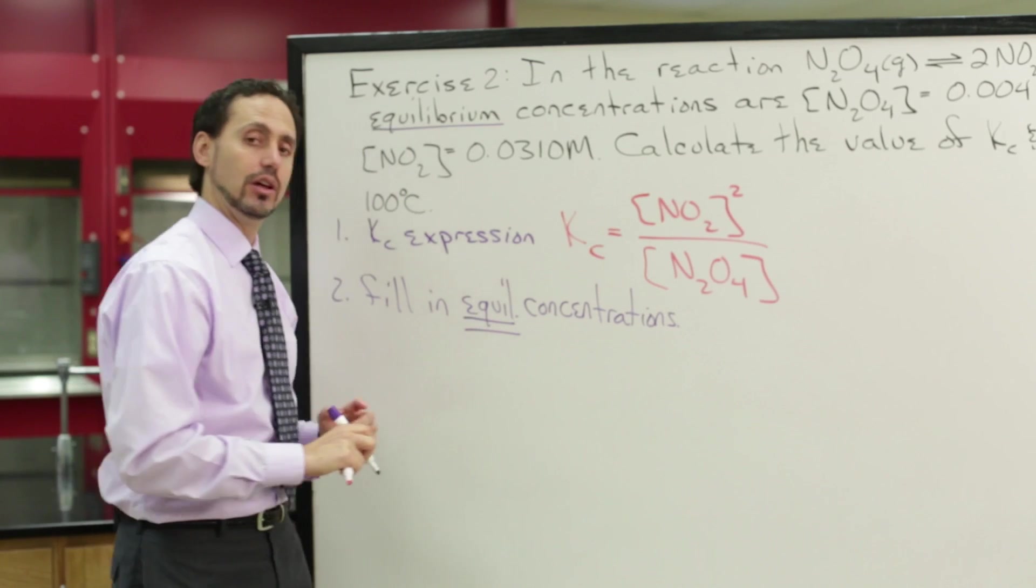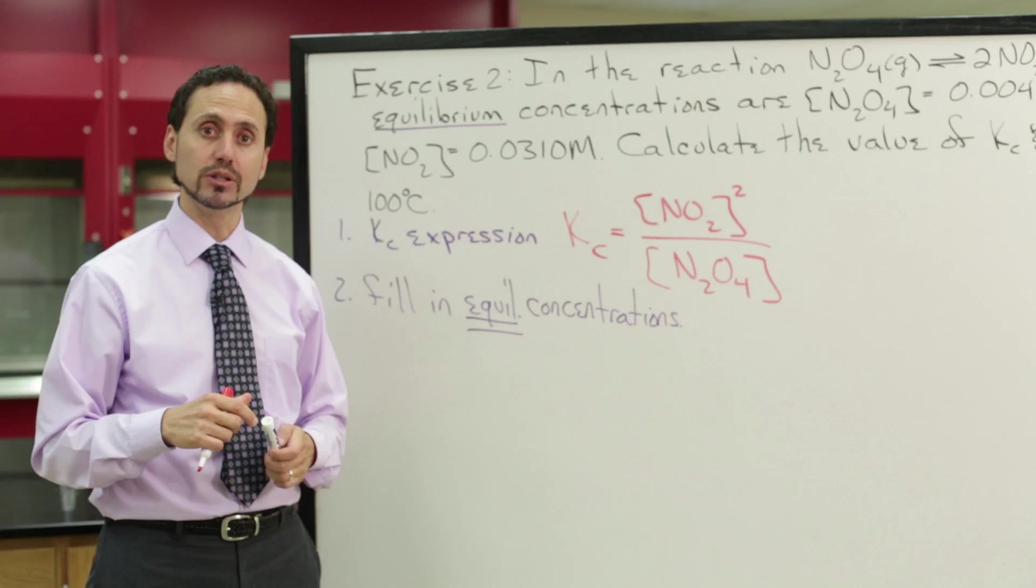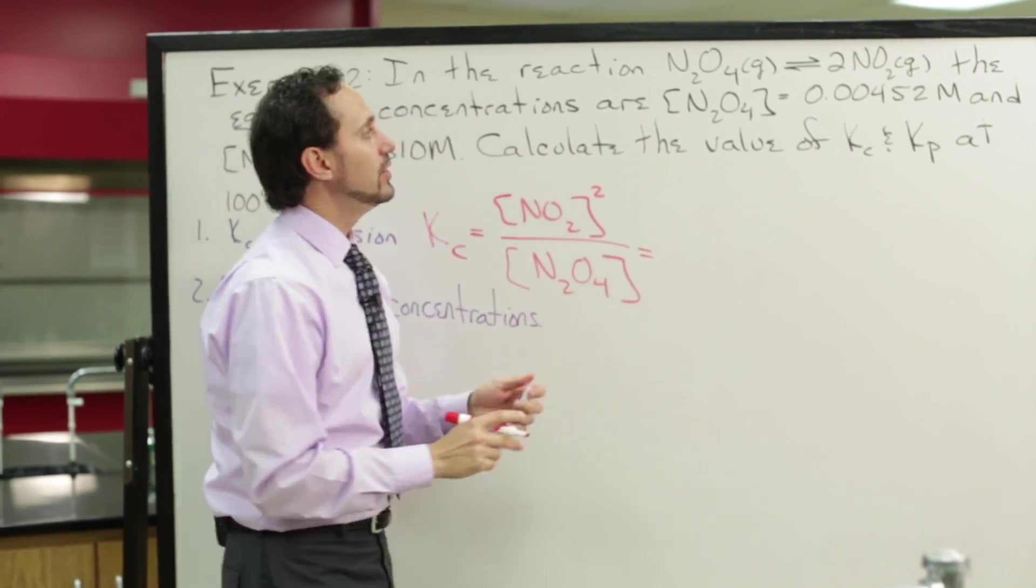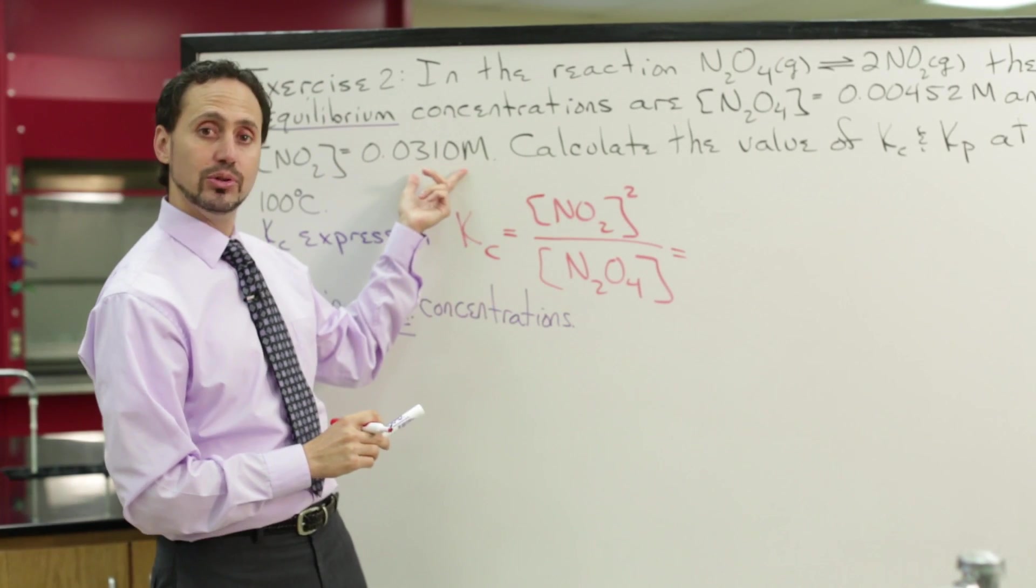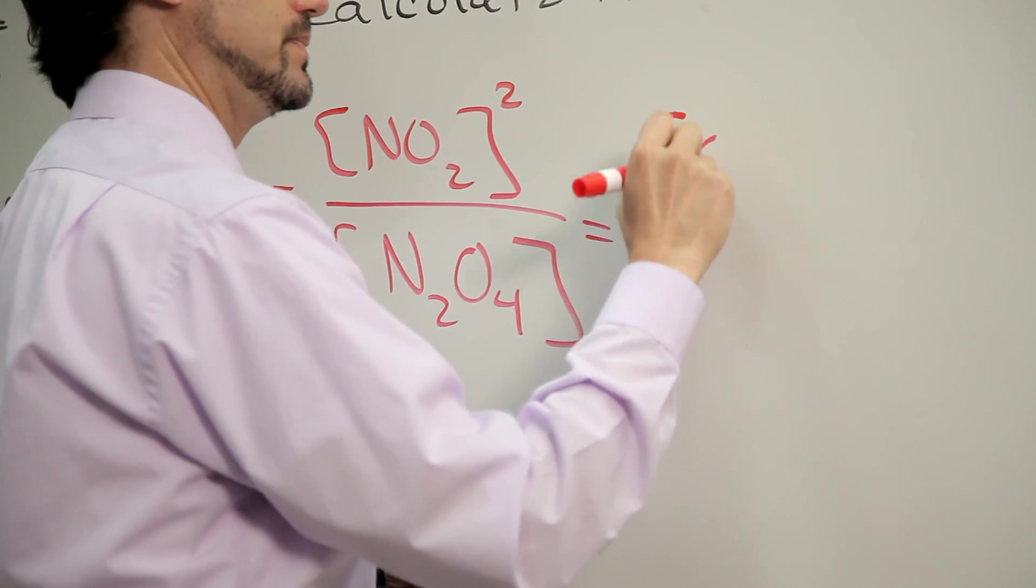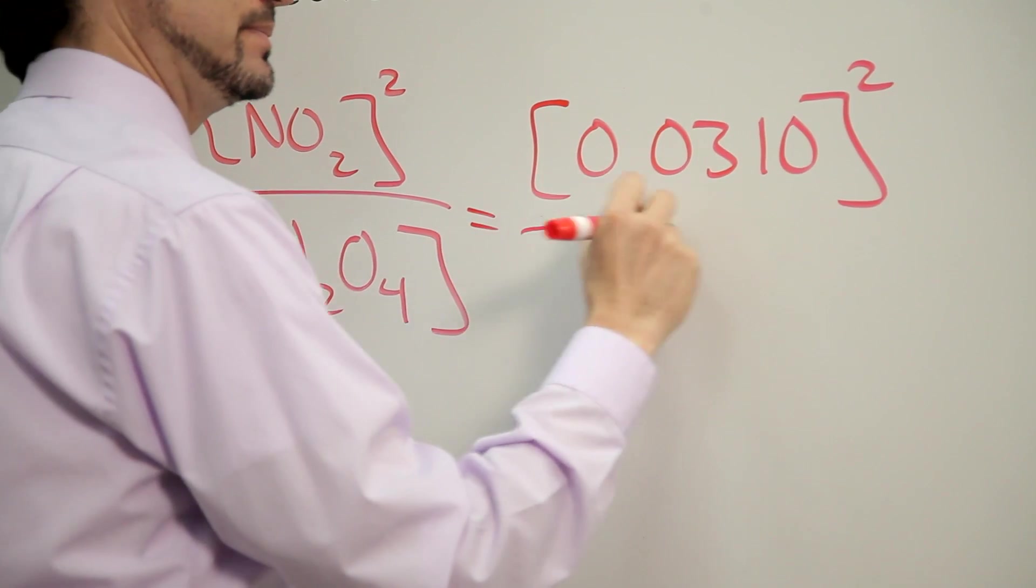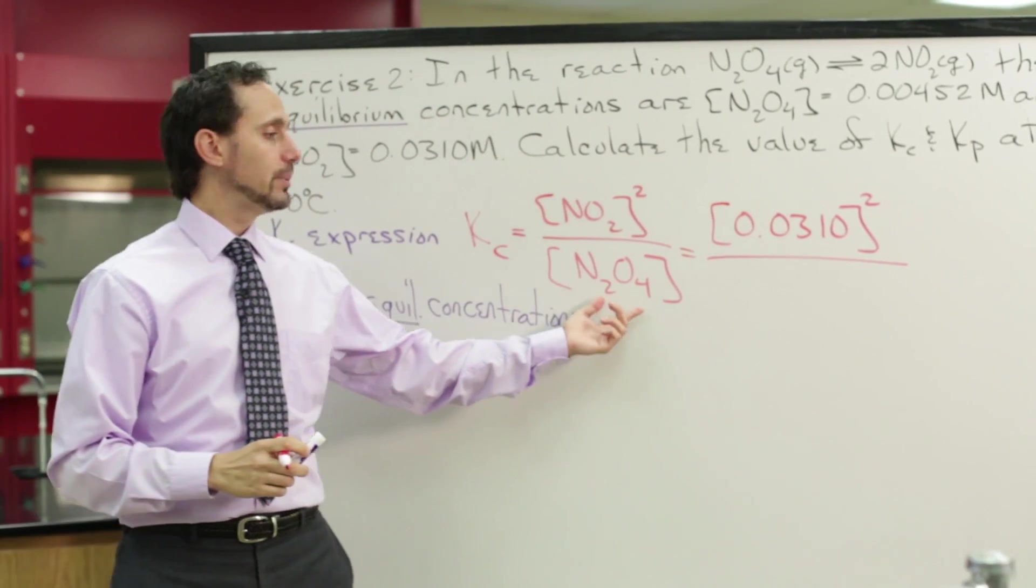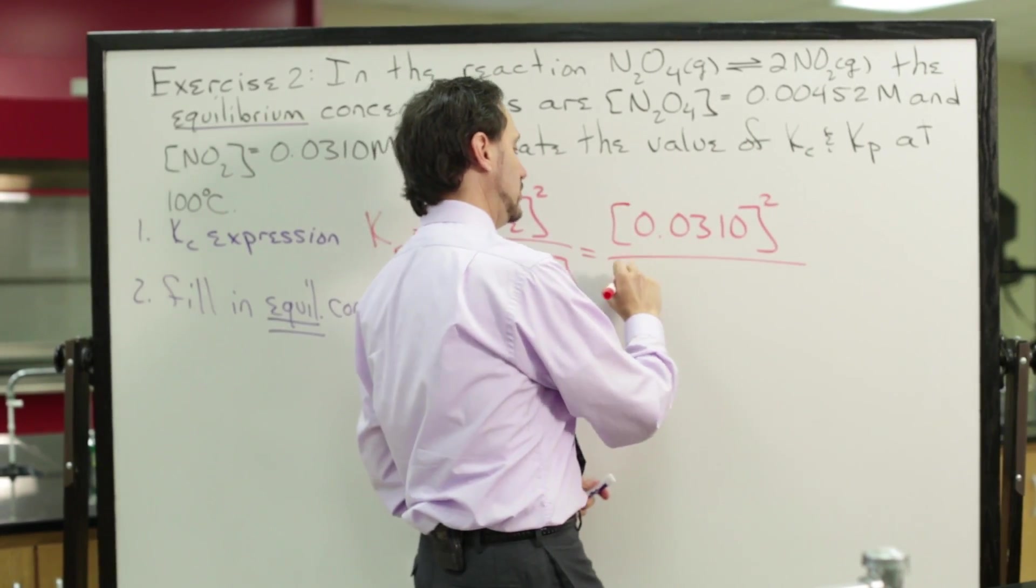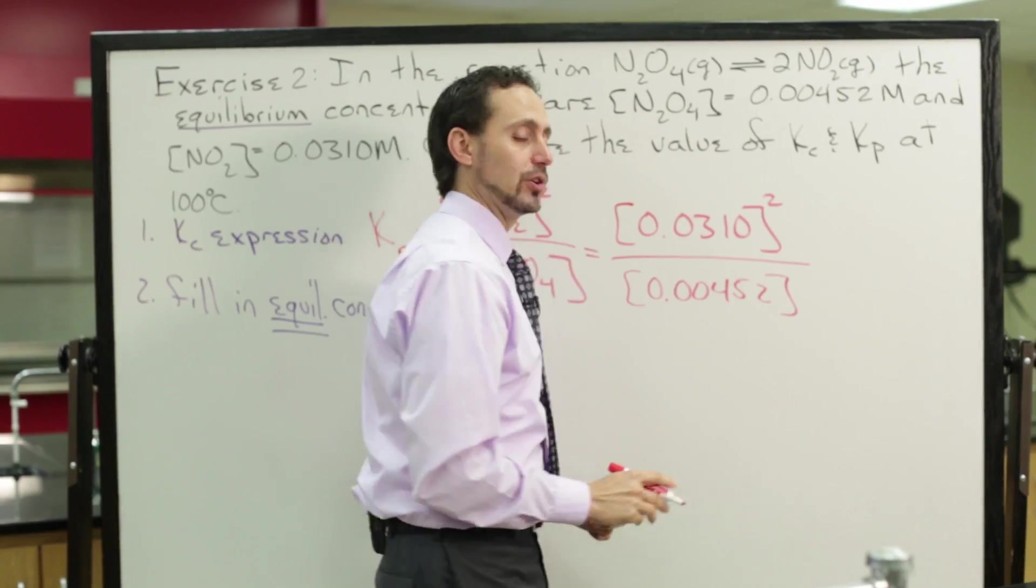So again, pay attention to the fact that equilibrium constant expressions only involve equilibrium concentrations. So let's go ahead and plug in these values. The equilibrium concentration for NO2 is 0.0310 and we'll square that. The equilibrium concentration for N2O4 is 0.00452 to the first power.